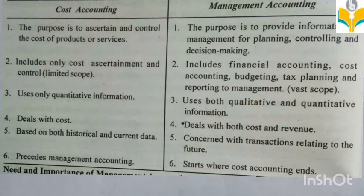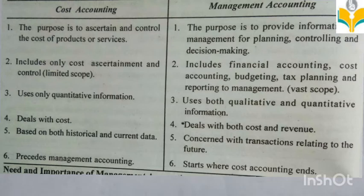Fourth: cost accounting deals with cost control, cost determination, and cost distribution or allocation only. Management accounting deals with both cost and revenue. Fifth: management accounting is concerned with transactions relating to the future. Last: cost accounting precedes management accounting — management accounting starts where cost accounting ends.